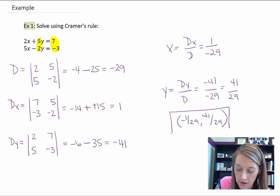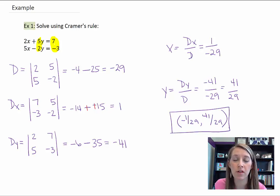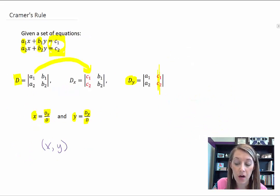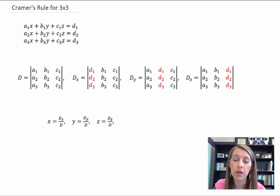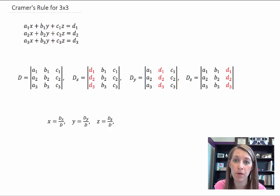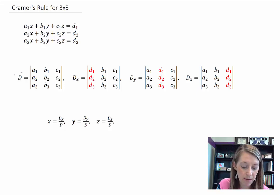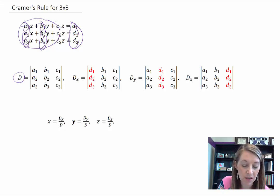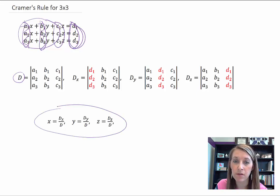I'd encourage you to use a graphing calculator to check that solution. Now, Cramer's Rule doesn't only work for 2x2s — it also works for 3x3s and anything larger. Of course, the higher the matrix, the more difficult it becomes to compute the determinant. The formula looks exactly the same: D uses your coefficients; D sub x replaces x coefficients with answers; D sub y replaces y coefficients with answers; D sub z replaces z coefficients with answers. Then you divide them to get your x, y, and z coordinates.